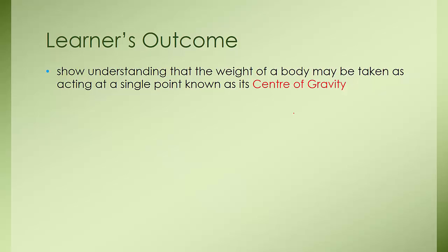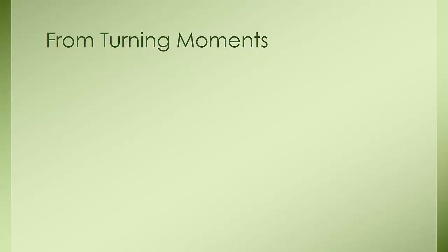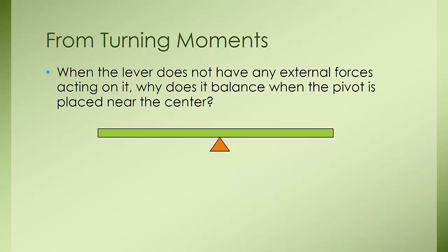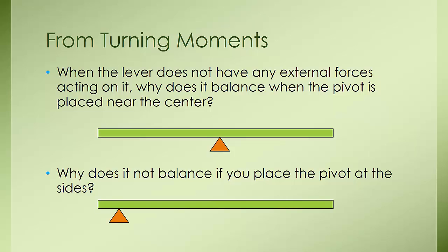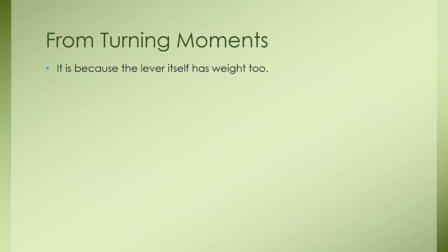So how do we arrive at this point of center of gravity? From turning moments, we know that when the lever doesn't have any external force acting on it, it actually does balance. But why does it balance when the pivot is placed near the center? Why doesn't it balance if you place the pivot right at the side? If you place the pivot at the side, there is no way to balance and it will actually rotate. It is because the lever itself actually has weight and force.